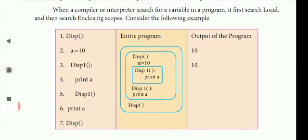In the code example: display function, a is assigned as 10. Next display1 function, next print a. Then display1 is called inside display, then display is called. This is the sudo code and this is the entire program.